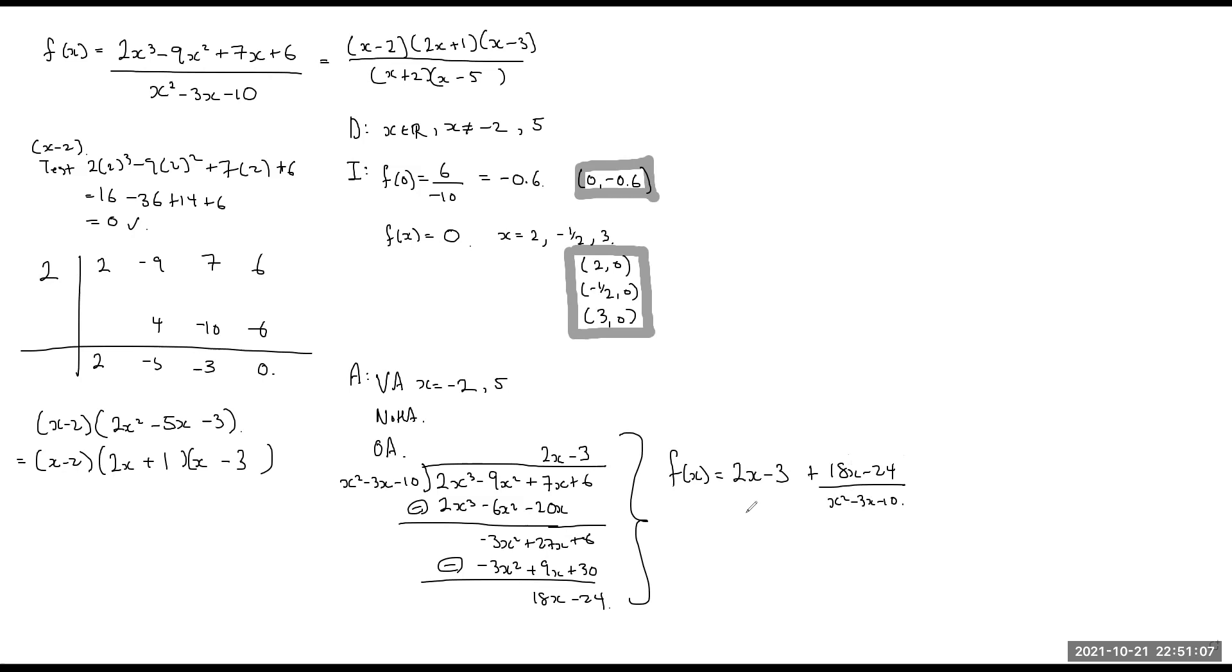So by end behavior, you can say that as x approaches infinity, what do we have? f of x is going to be 2x minus 3, and then this will be a large infinity divided by a larger infinity. In other words, you're going to be adding by a very, very, very small number.